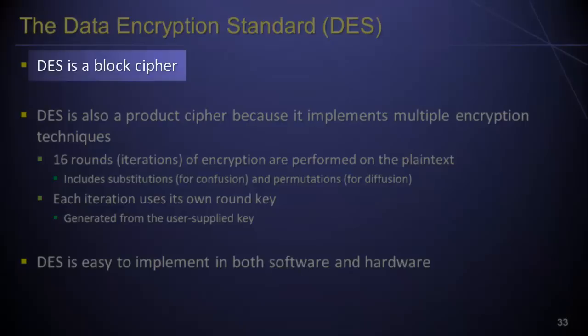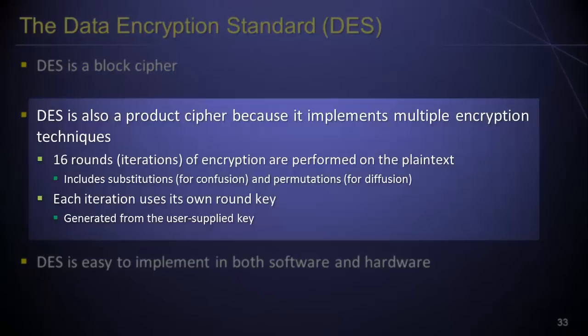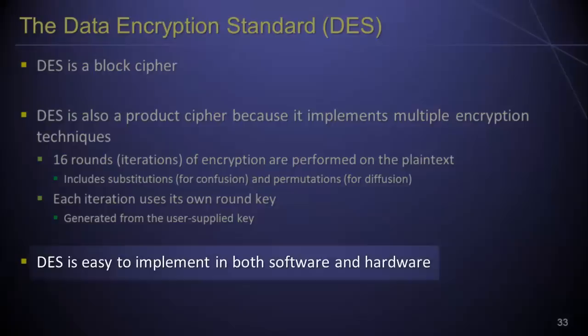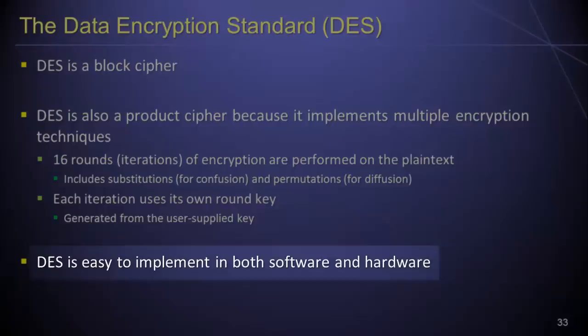The DES algorithm can be characterized as a block cipher. It is also a product cipher, implementing multiple encryption techniques and transformations. The algorithm applies 16 rounds of iterations of encryption to the original plaintext, including multiple substitution rounds to ensure confusion and multiple transposition or permutation rounds to ensure diffusion. Each of the 16 rounds uses its own unique round key, derived from the user-supplied key. Despite this seeming complexity, DES is easy to implement in both software and hardware devices.